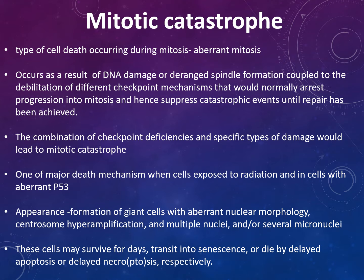In necrosis, small blebs form, the nucleus changes, blebs fuse and become larger, and the cell membrane ruptures, releasing cell contents — and the organelles are no longer functioning. Mitotic catastrophe is a type of cell death occurring during mitosis — it is aberrant, out-of-control mitosis. It occurs as a result of DNA damage or defective spindle formation coupled to the disabling of checkpoint mechanisms that would normally arrest progression into mitosis. The combination of checkpoint deficiencies and specific types of damage leads to mitotic catastrophe, and it is one of the major death mechanisms when cells are exposed to radiation, involving aberrant p53. Giant cells with aberrant nuclear morphology, centrosome hyperamplification, and multiple nuclei or micronuclei may form, and these cells may survive for days before transitioning to senescence or dying via delayed apoptosis or delayed necrosis.